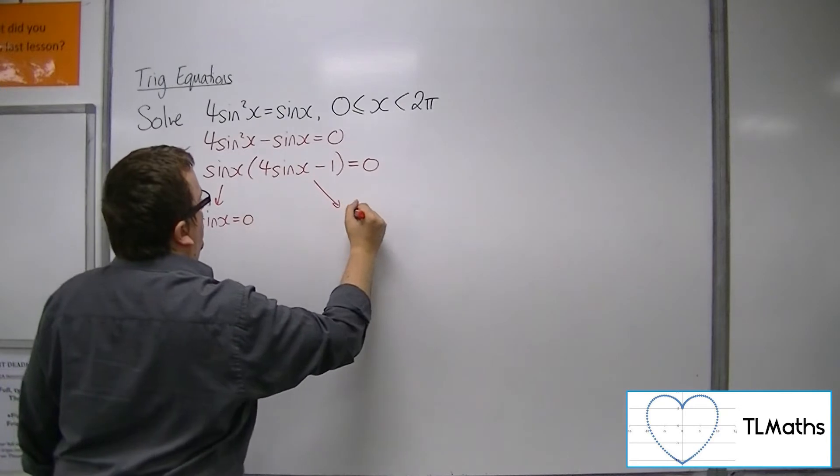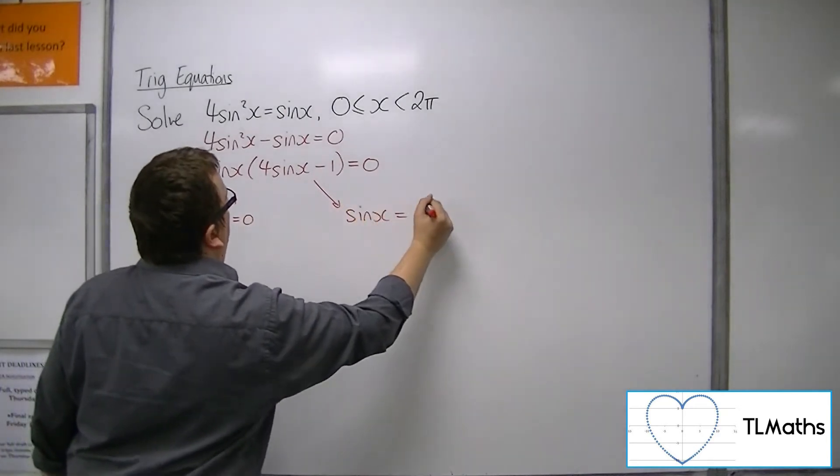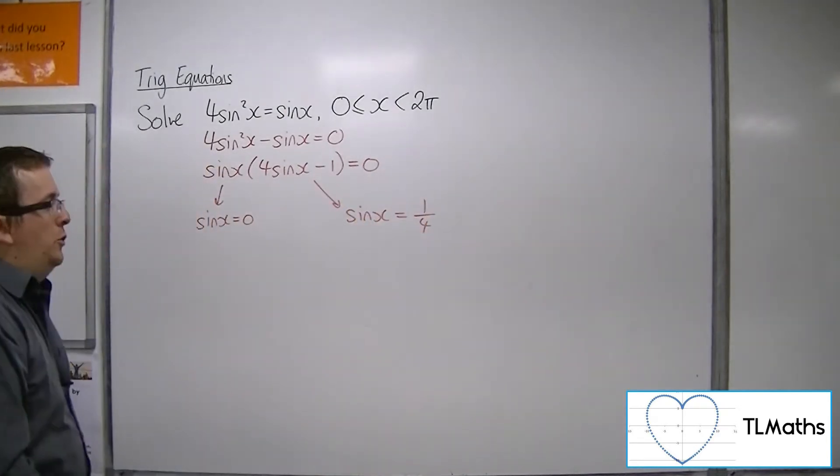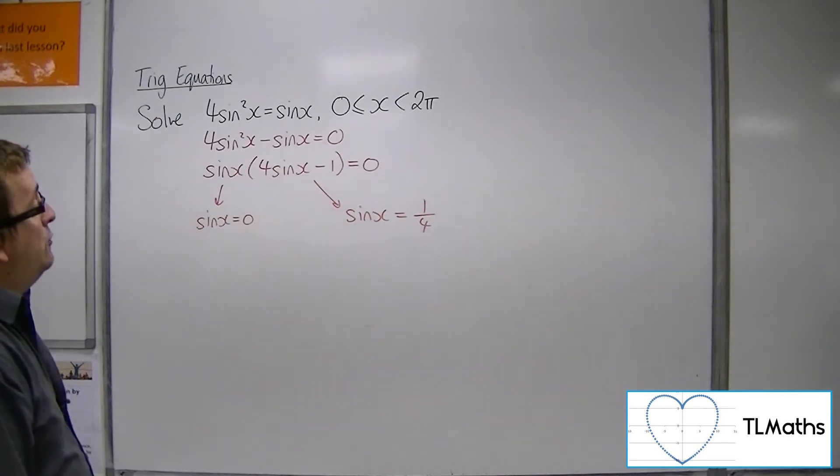So that we're going to solve sine x is 0, and we're going to solve sine x is 1 quarter. These are the two equations we need to solve between 0 and 2 pi.